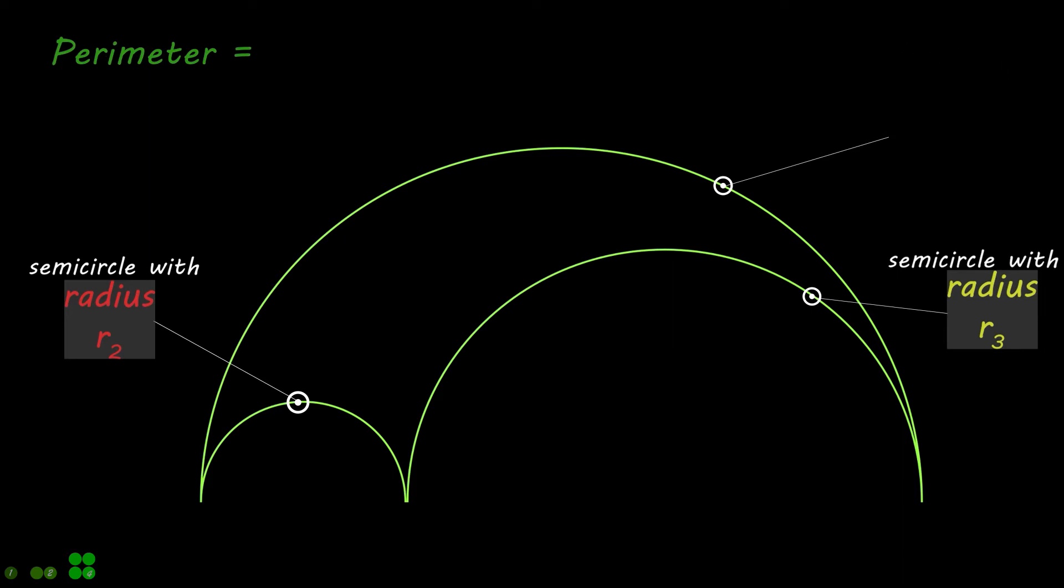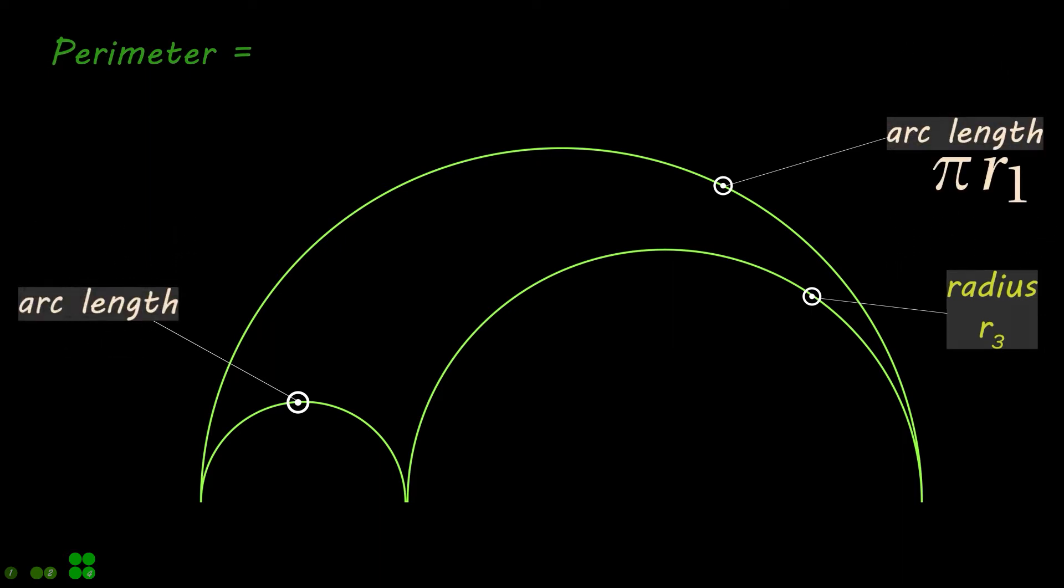Now for this given shape, we can write the arc lengths for each semicircle as shown.